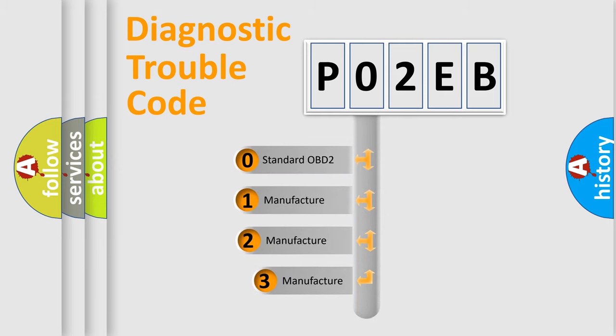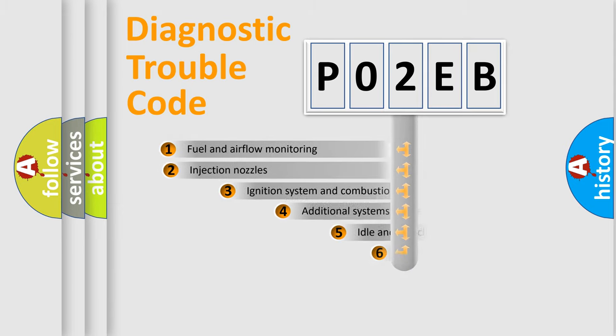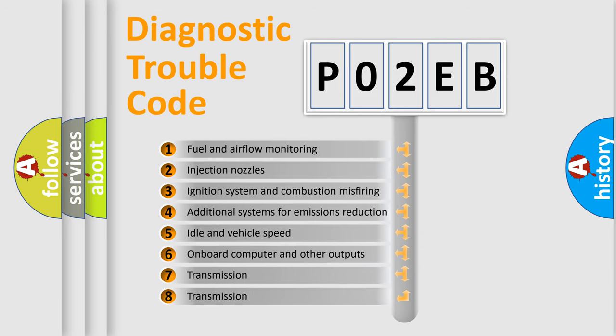If the second character is expressed as zero, it is a standardized error. In the case of numbers 1, 2, or 3, it is a manufacturer-specific error. The third character specifies a subset of errors.